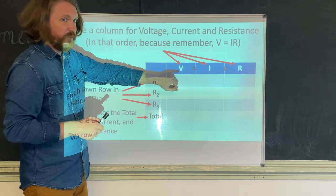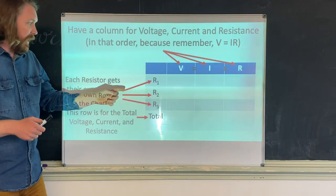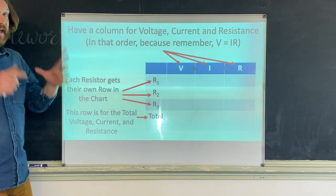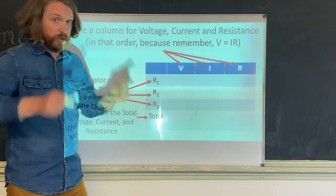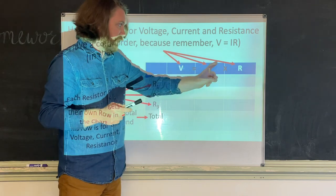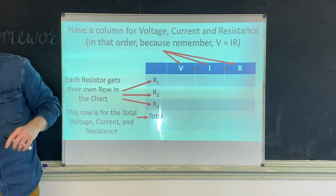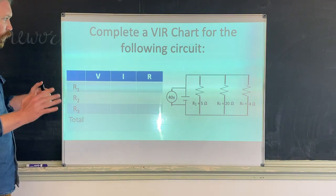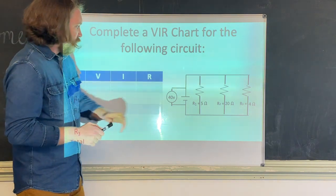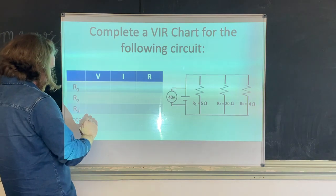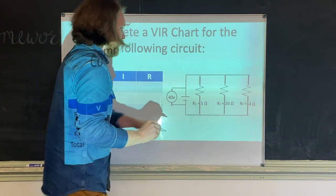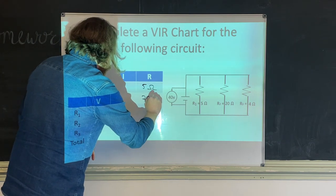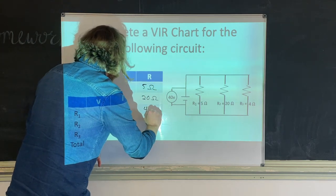The VIR chart has three columns — voltage, current, resistance — and one row for each resistor plus one row for the total. It's important to keep V, I, and R in the correct order since voltage equals current times resistance. For this problem: the battery supplies 40 volts total. Resistors are R1 = 5 ohms, R2 = 20 ohms, R3 = 4 ohms.